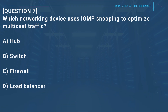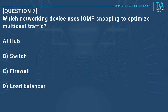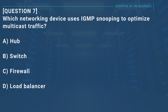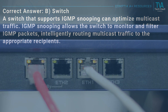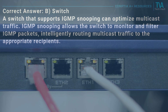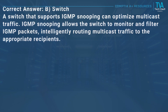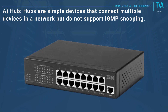Question 7: Which networking device uses IGMP snooping to optimize multicast traffic? A, hub. B, switch. C, firewall. D, load balancer. Answer: B, switch. A switch that supports IGMP snooping can optimize multicast traffic. IGMP snooping allows the switch to monitor and filter IGMP packets, intelligently routing multicast traffic to the appropriate recipients.